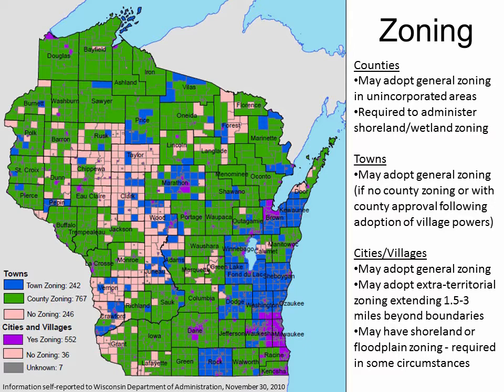At the municipal level, the majority of cities and villages have adopted general zoning ordinances. These areas are shown in purple on the map. A handful of cities and villages also exercise extraterritorial zoning — zoning that applies within 1.5 to 3 miles of the municipal boundary. It requires approval from a joint zoning committee consisting of equal members from the municipality and affected towns, making extraterritorial zoning a cooperative venture between municipalities and towns.